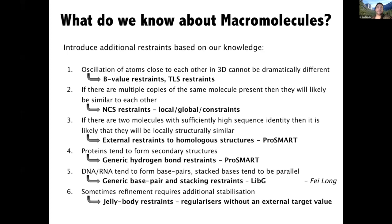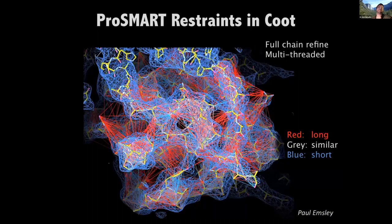Sometimes refinement requires additional stabilization, and for this we use jelly body restraints. These are special regularizers without an external target value, so whilst they might slow down refinement a bit, they will not introduce any external bias to the system. These are so useful as priors that they are on by default in the CCPEM interface. The external restraints generated by ProSMART can also be visualized and used during refinement in Coot.